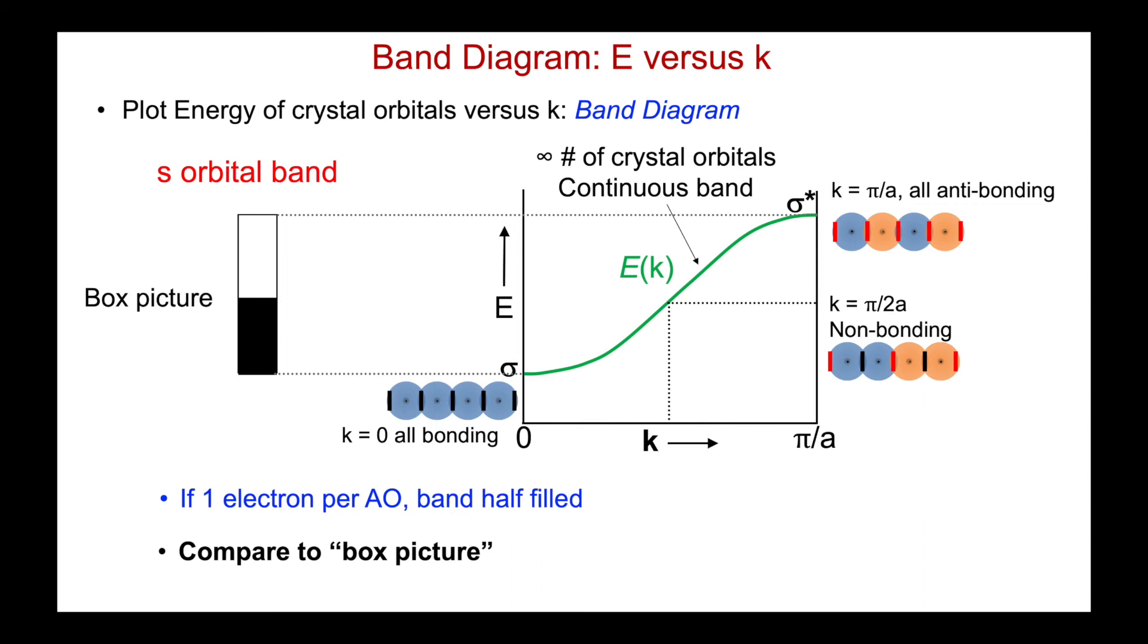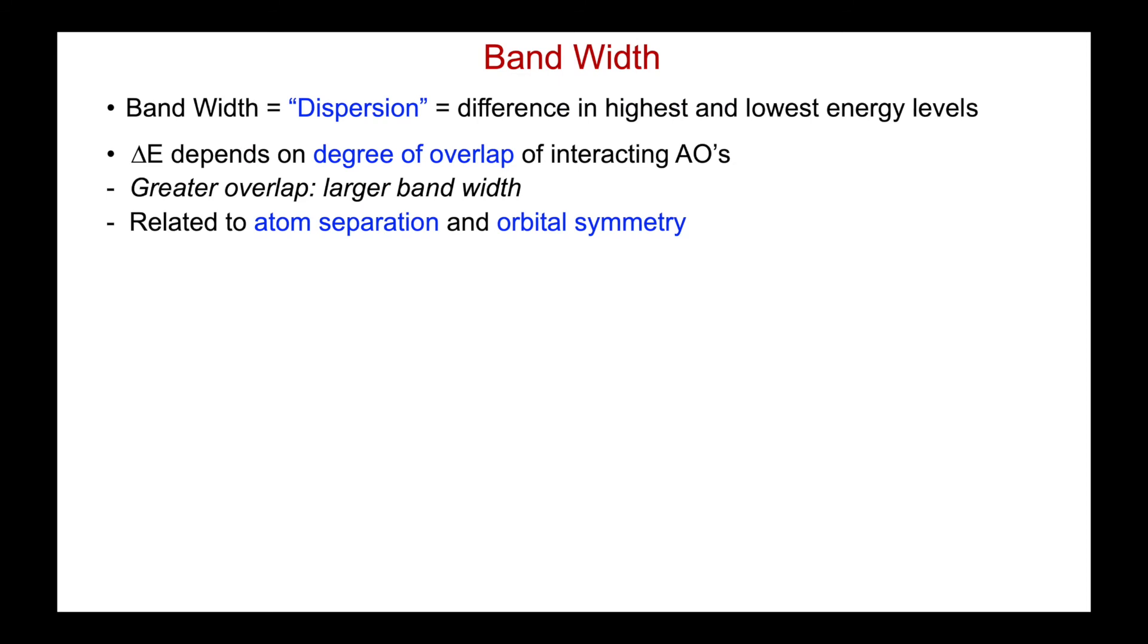Next, let's just talk briefly about something that's called the band width. And we're going to see that that's the energy difference between the most anti-bonding and most bonding crystal orbitals. So the band width, or as it's often called the dispersion of a band, is that energy difference between the highest and lowest possible energy levels. And its value depends on the degree of overlap of the interacting atomic orbitals.